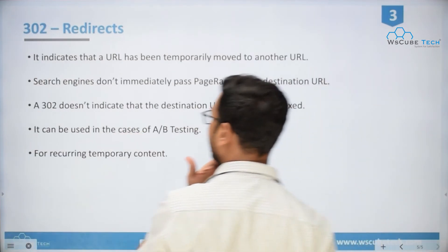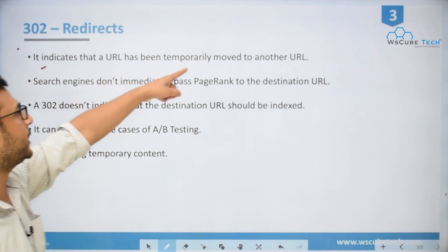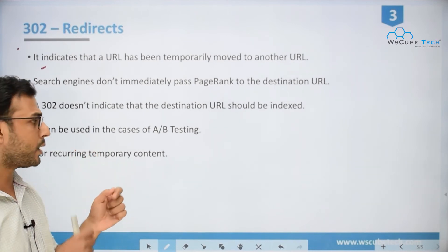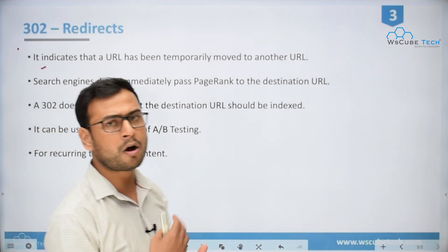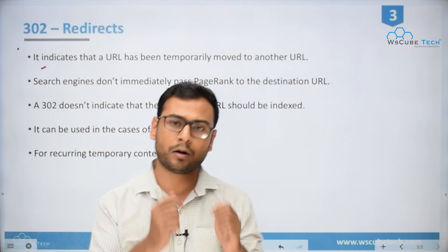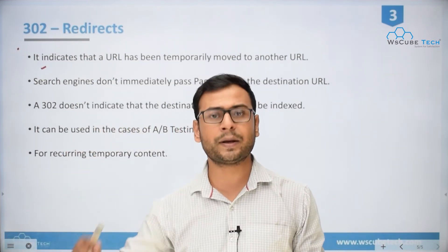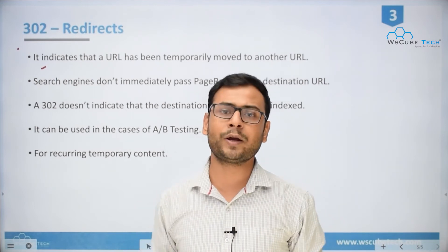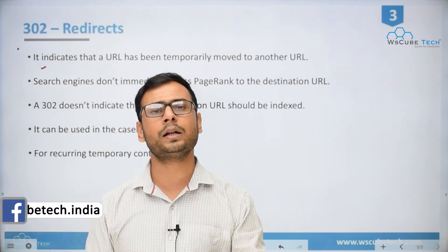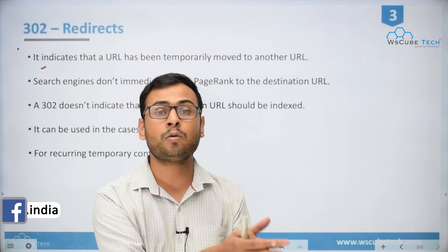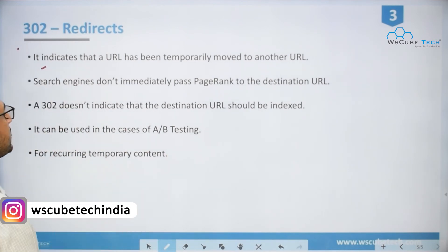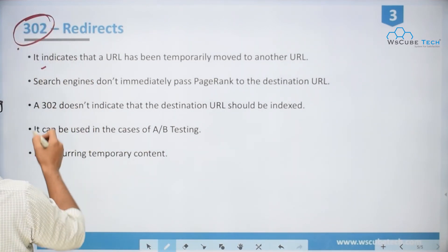When we talk about 302 redirection, it indicates the URL has been temporarily moved to another URL. It is a temporary shift — not a permanent one. There is no new domain or if there is, it is not a permanent shift. In that case, we do not require all the SEO value to be transferred to the new domain, because we are assuming we'll be coming back to the previous URL. So if we're coming back, there's no need to pass all the link strength to the new URL — in that case we use 302 redirection.